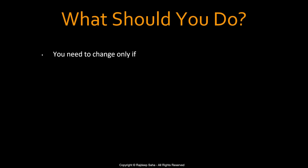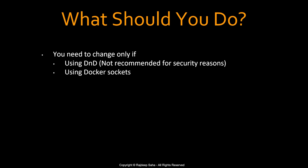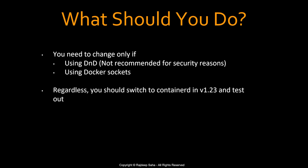So what should you do? You need to change your Dockerfile or container image only if you are using Docker-in-Docker — which is not recommended for security reasons — or you are using Docker sockets. Most cases you are probably not using these two things. But regardless, even if you are not, you should switch to Containerd in version 1.23, which is the current Kubernetes version, and test it out. Also, you have one year to switch to version 1.24, so you have plenty of time before Docker runtime is completely removed.